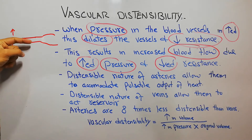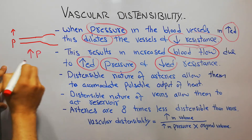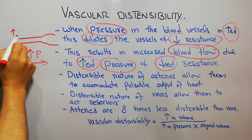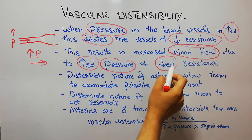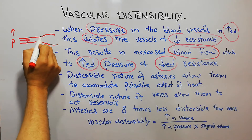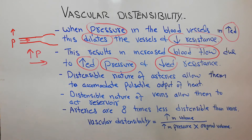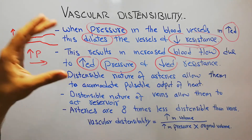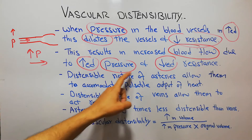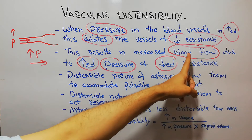When the pressure of blood in the vessel increases, it increases blood flow by two mechanisms. First, the increased pressure pushes the blood forward. Second, increased pressure also leads to dilation, which results in decreased resistance. So vascular distensibility helps increase blood flow due to not only increased pressure but also decreased resistance.